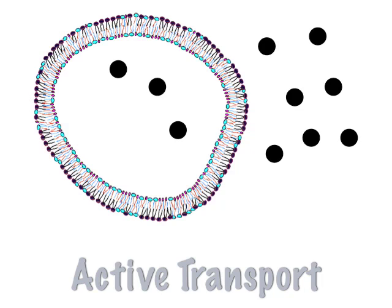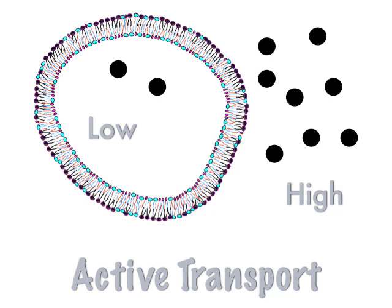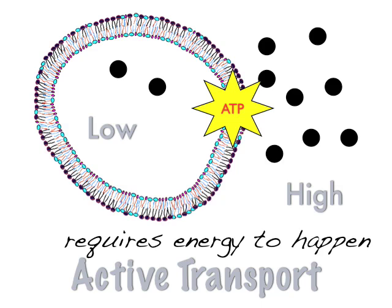Active transport is the opposite of diffusion. Active transport is where there's low on one side of the cell and high on the other side — you go from low to high, so one from inside will move out. The problem is you need energy for it to happen: ATP. It doesn't happen automatically, so a lot of times you have to write that it requires energy if they ask how active transport is different.